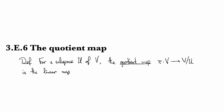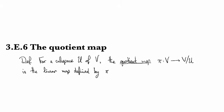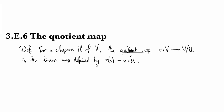This is the linear map defined by π(v) = v + u. And so you can see that this is going to be a surjective map. However, it's not going to be injective if u is a non-trivial subspace, because any elements of u are going to get identified under the quotient map. And so by identified, I mean mapped to the same point.